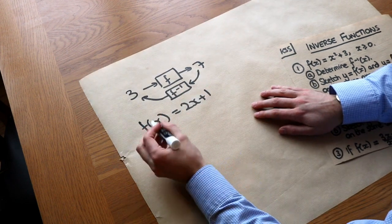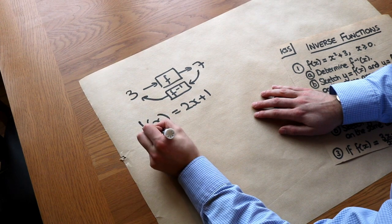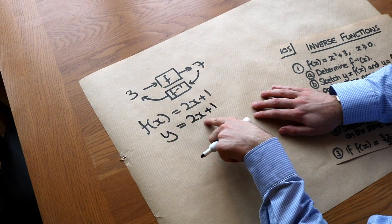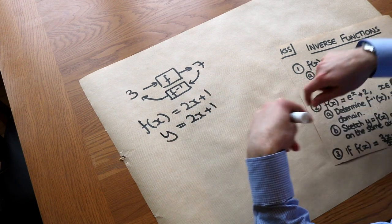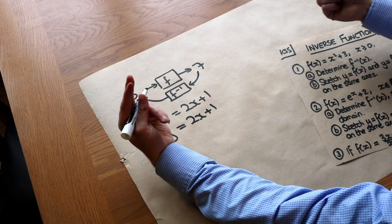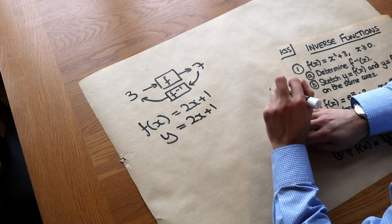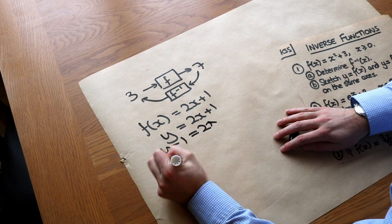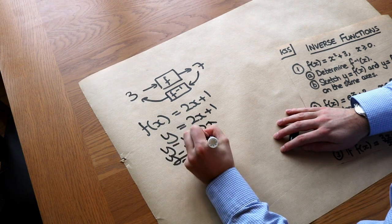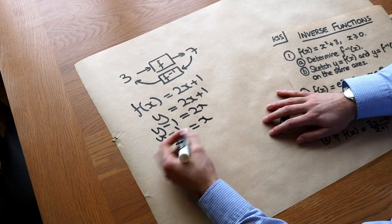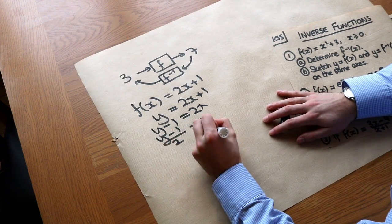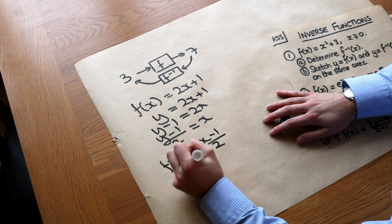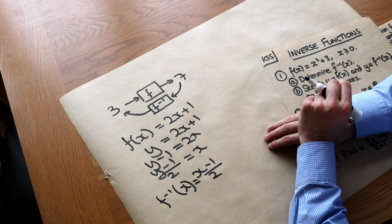The way you might be used to doing it is to replace f(x) with y, just as a convenience, so the output is written as y and the input as x. Because we now want the input in terms of the output, to reverse the process we make x the subject. So we minus 1 from both sides, divide both sides by 2, and then replace the y back with x — because functions are always in terms of x — and write f⁻¹(x) using the correct notation.